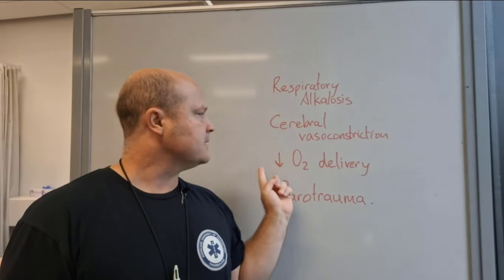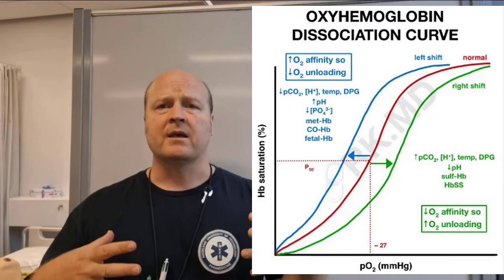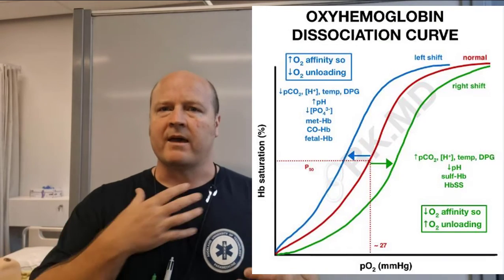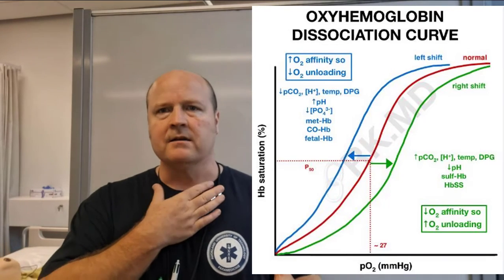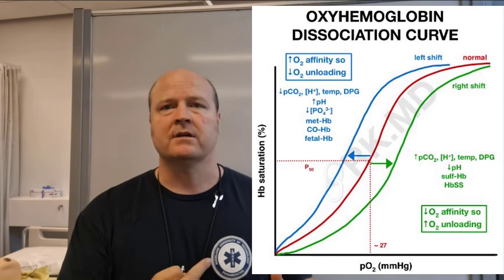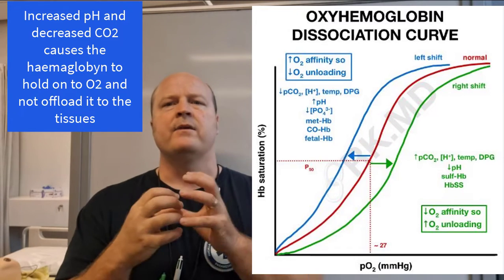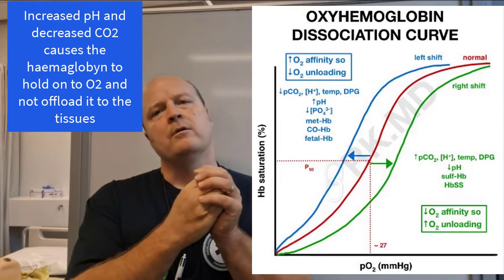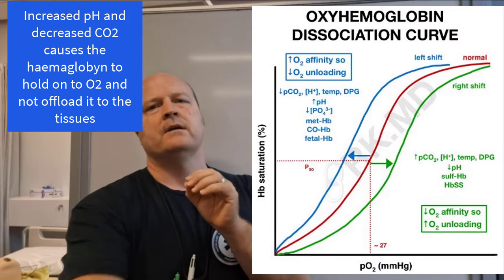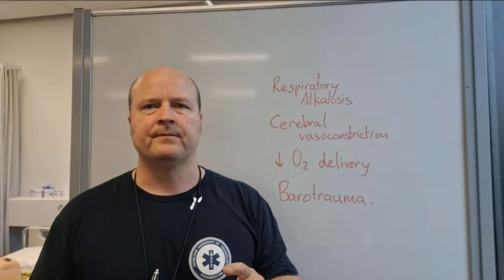The next one: decreased oxygen delivery. If our body becomes too alkaline, then even though we have a lot of oxygen in our blood circulating, the haemoglobin molecules are less ready to let go of it because our body has become more alkaline.